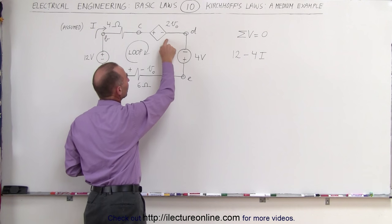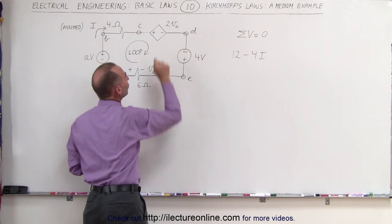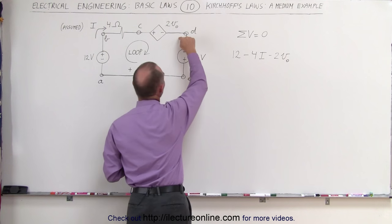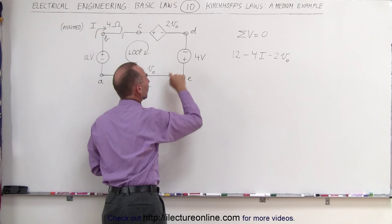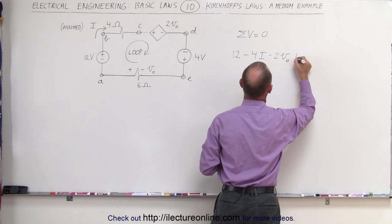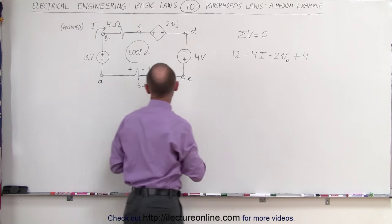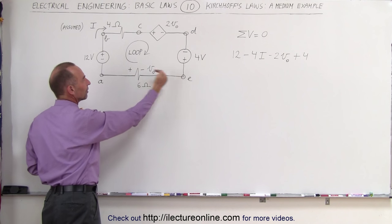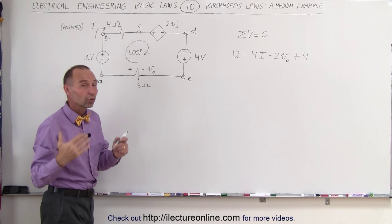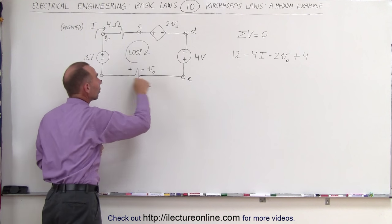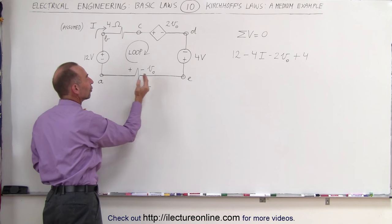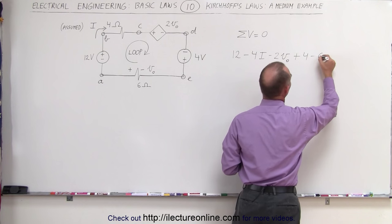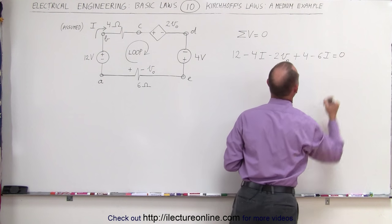Here we have a voltage drop across this voltage source equal to minus 2 V sub nought. Now we have a voltage rise across this battery or this voltage source, so plus 4. And finally, even though we know that the actual voltage drop is from the negative end to the positive end in this direction, we're just going to assume the direction of the current is clockwise and therefore we assume a voltage drop. 6 ohms times the current. Minus 6 times the current and that adds up to zero.